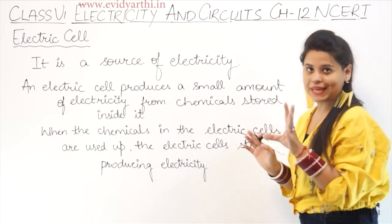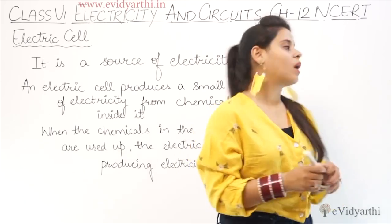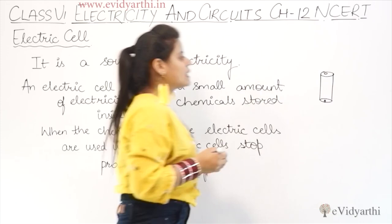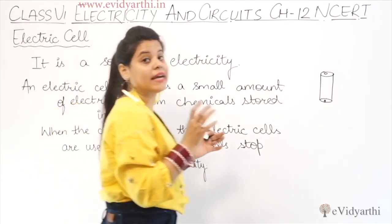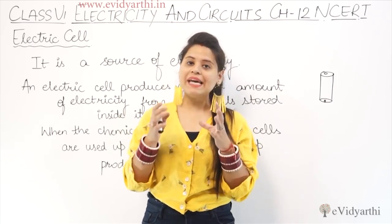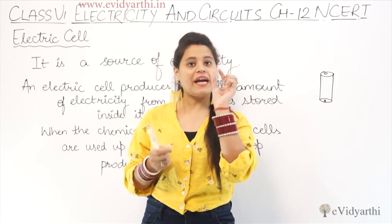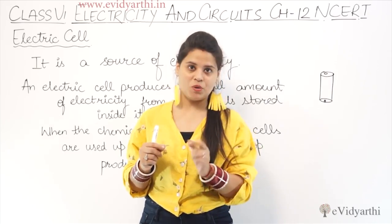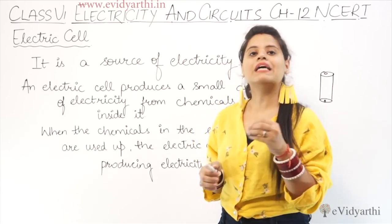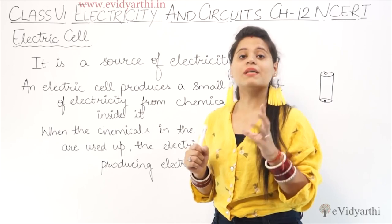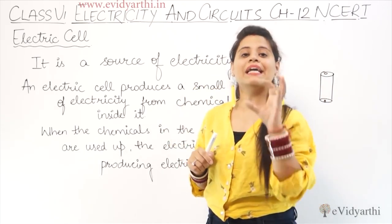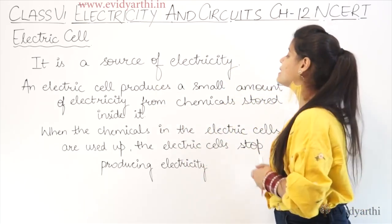Next is Electric Cell. My first topic is Electric Cell. What is an electric cell? All the devices around us - a cell is used to make them work. All these cells are a source of electricity, just like a TV remote. Electric cells are a source of electricity. They are connected to things like our switchboard. The cell also produces electricity - a cell produces a small amount of electricity.